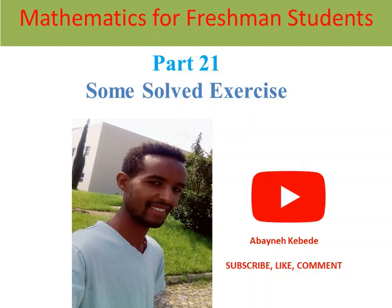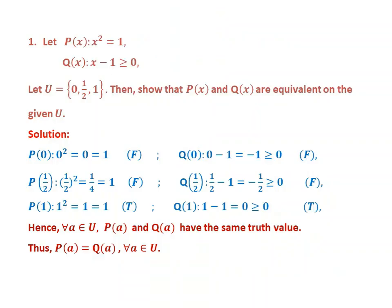Mathematics for Freshman Students, Part 21: Some Solved Exercises. Question number 1 states: Let P(x) be given as x² = 1, and Q(x) such that x - 1 ≥ 0. Let U equal the set containing 0, 1/2, and 1. Then show that P(x) and Q(x) are equivalent on the given U.